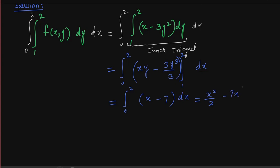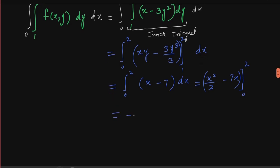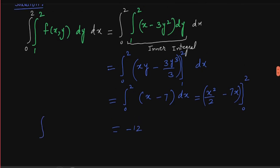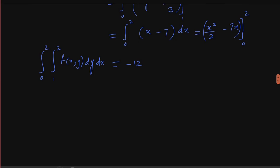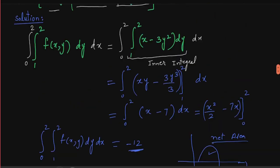پھر outer integral: integral from 0 to 2 of (x − 7) dx solve کریں۔ یہ x²/2 − 7x from 0 to 2 دیتا ہے، اور answer ہے minus twelve۔ Volume under the surface minus twelve ہے — یعنی وہ surface xy-plane سے negative z direction میں ہے، یا یہ net area ہے جیسے single variable میں ہوتا ہے۔